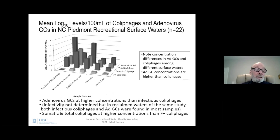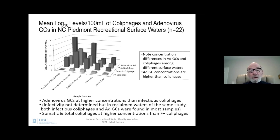We also determined log concentrations of coliphages and adenoviruses in recreational surface waters — many in the same areas where we analyzed the wastewater samples — from five surface water sites in the Piedmont region of North Carolina. We found that adenovirus gene copies were at higher concentrations than coliphages, regardless of which coliphages were measured: whether total coliphages (somatic plus male-specific), somatic coliphages alone, or F-plus coliphages alone. The F-plus coliphages were detected least of all.